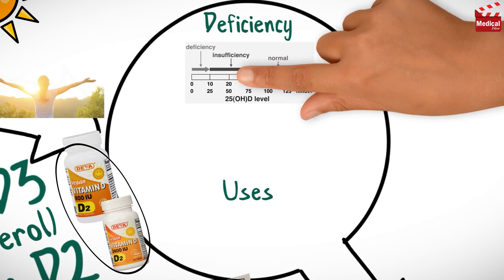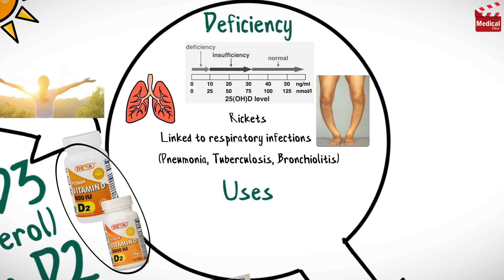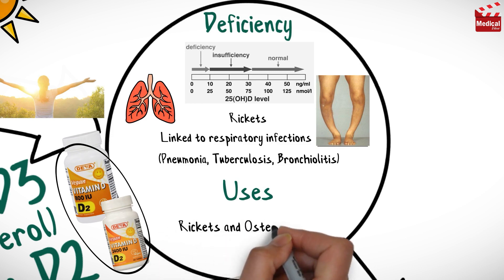In addition to causing rickets, vitamin D deficiency has been linked to respiratory infections such as pneumonia, tuberculosis, and bronchiolitis. Pneumonia is a severe form of acute lower respiratory tract infection and is the leading cause of death in children worldwide. Some studies have suggested that vitamin D supplementation can decrease the frequency and severity of respiratory infections among children, however further research is needed. Vitamin D is indicated in the prevention and treatment of vitamin D deficiencies, rickets, and osteomalacia.